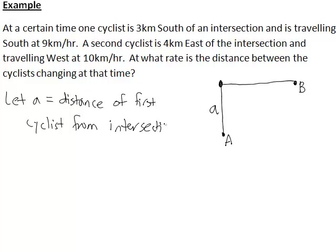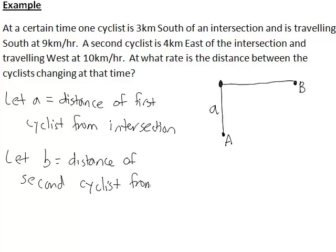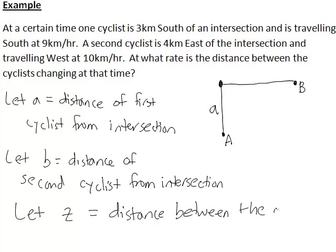Similarly, we could then let B be the distance of the second cyclist from the intersection. But what else are we actually interested in? We're actually interested in the rate at which the distance between the cyclists is changing. So we could let Z be the distance between the cyclists. The actual names given to the variables, A, B and Z, that in itself won't matter. That really is just for convenience. But the main thing is to define all of them so that we know what quantities we are relating.